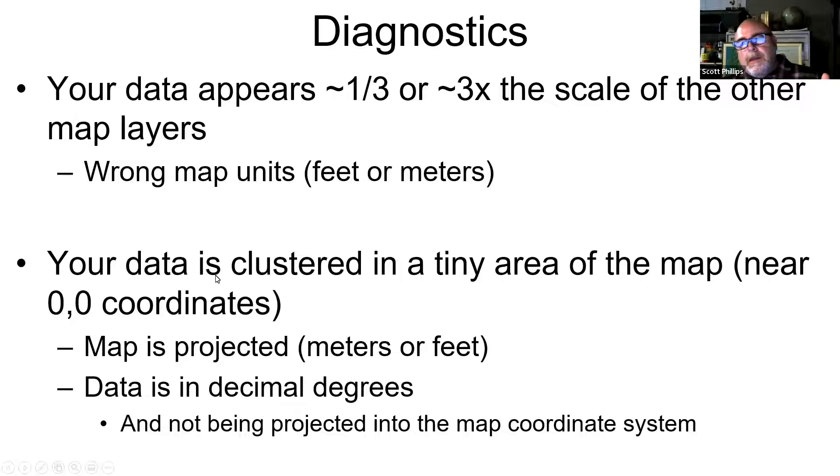On the other hand, let's say you have data that is appearing in a weird place and also appears too small, about a third of the size of what it should be, or on the other hand, appears three times the size of what it should be. Then what you may suspect there is that you have the wrong map units, that maybe the map is displaying things in feet, but the data is in meters or vice versa. The map is displaying things in meters and your data is in feet, but it's coded wrong. So it's being shown as too big or too small. And especially if it's like, because there are three feet to a meter roughly, so if it's a third of the scale or three times the scale that you're suspected should be, check the map units.